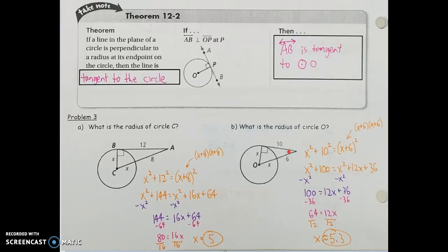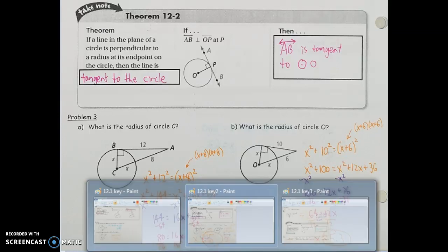For the next practice problem, we set up Pythagorean theorem the same way: X² + 10² = (X + 6)². Expanding the right-hand side: X² + 12X + 36. Subtracting X² and 36 from both sides, then dividing by 12, X comes out to about 5 and a third, or 5.3 to the nearest tenth. So 5.3 would be the radius.